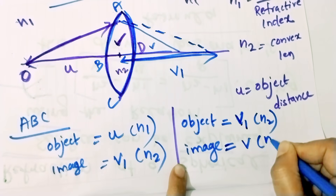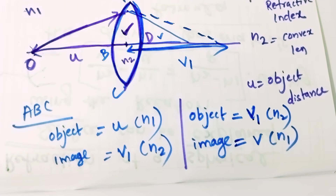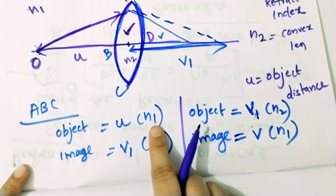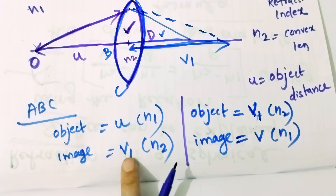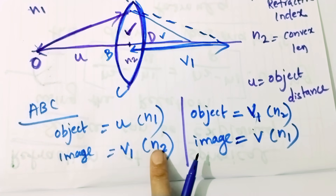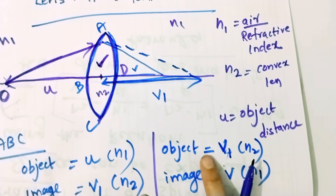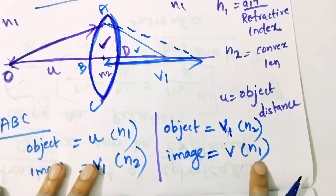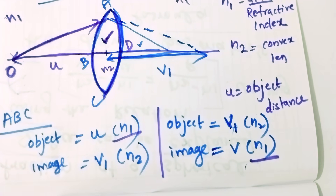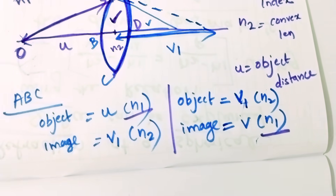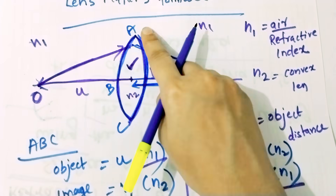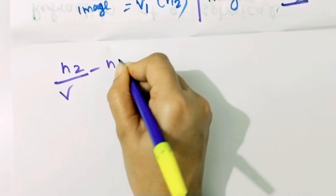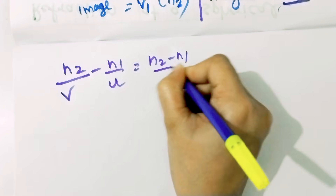The correct image corresponds to N1. If you have object ABC at distance U, that is N1. For the first spherical surface, we apply the refraction formula. The relation for the spherical surface is: N2/V minus N1/U is equal to N2 minus N1 divided by R1.